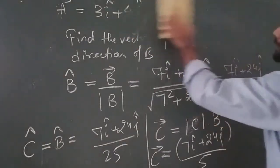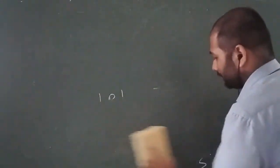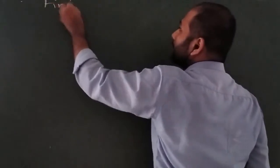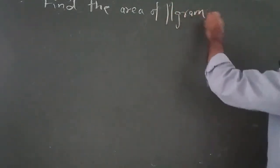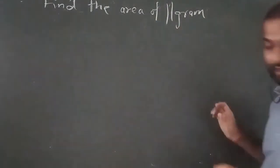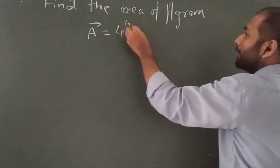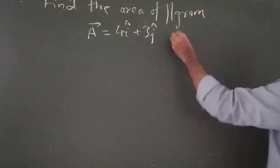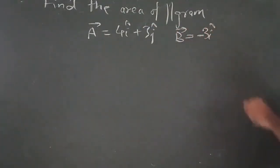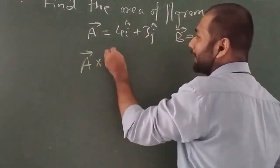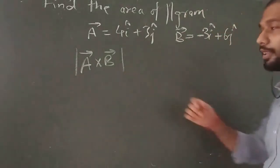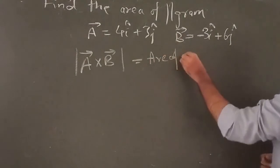One more question on vectors: find the area of a parallelogram if the two sides are given as vectors. Vector A = 4î + 3ĵ and vector B = -3î + 6ĵ. From the properties of the cross product, the magnitude of A × B geometrically represents the area of the parallelogram. So we need to compute the cross product and take its magnitude.